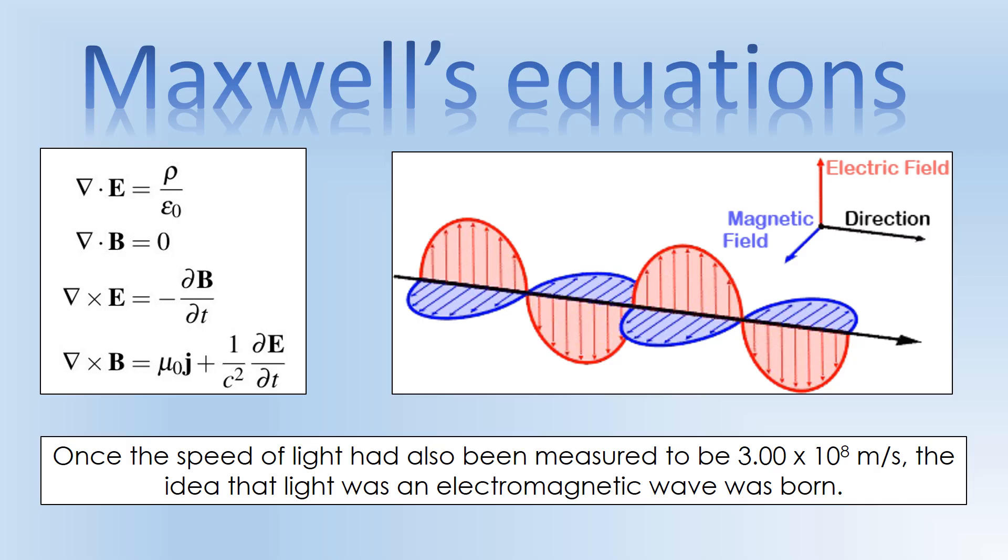So back to Maxwell's equations. What was going on simultaneously to all this work by Maxwell and these other scientists, was they were trying to measure how fast light travels. There had been all sorts of ideas about how fast it would travel. Some scientists thought it was infinitely fast, some people thought it was finite. And once they did measure the speed of light, they measured it to be 3 × 10⁸ in a vacuum. And then therefore you're able to get this idea, taking the work from Maxwell's equations and this measurement, that in fact light is an electromagnetic wave.